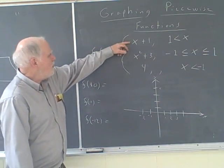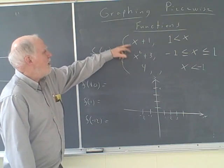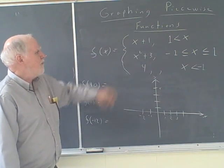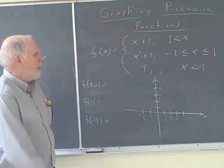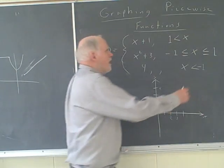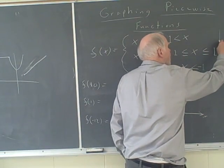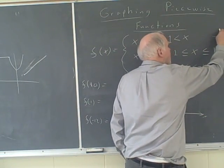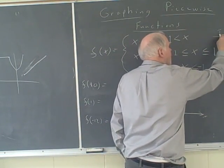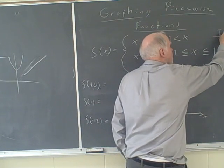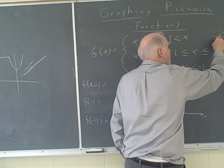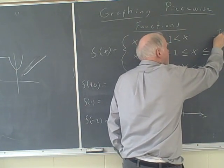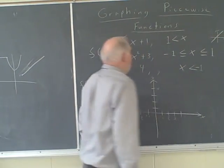Really, we're just dealing with functions that we know just about everything about. For instance, this first function, x plus 1 — I think everybody knows what this looks like. It's got a slope of 1. It's just a line.